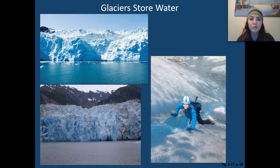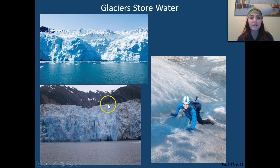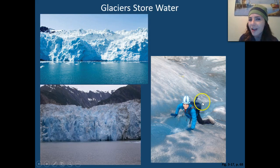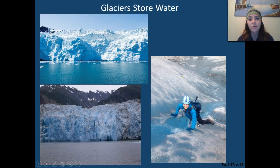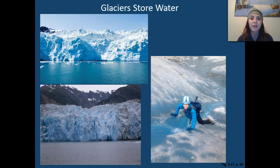One of the main reservoirs of fresh water is stored in glaciers. These are some different types of glaciers — this one is the Mendenhall Glacier; I had to throw this in, this is me climbing the Mendenhall Glacier. A lot of glaciers are melting because of global warming — you hear about the polar ice caps melting — so this is becoming a very large concern.